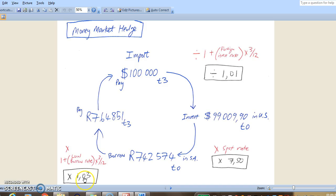So the local rate was 12% times 3 over 12. So that equates to 3%. 1 plus 3% is 1.03. So if we borrow R742,000 today in order to invest $99,000 in the US today,